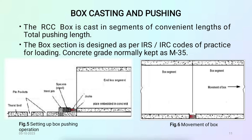Moving on to the next, we have box casting and pushing. The RCC box is cast in convenient length segments of the total pushing length. The box section is designed as per the IRS code of practice for loading; concrete grade is normally M35, which is a mix design. Figure 5 shows the setting off of box pushing operation, and Figure 6 shows movement of box using hydraulic jacks.